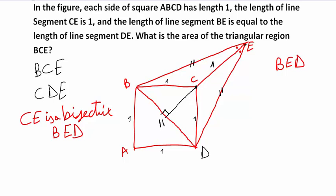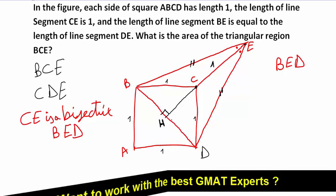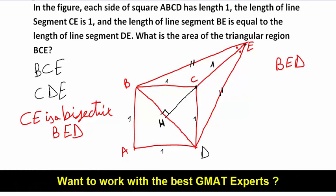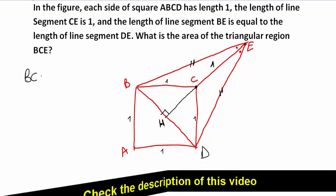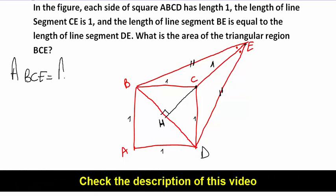Now I want the area of triangle BCE. I can express it as: area of BCE equals area of BHE minus area of BCH.